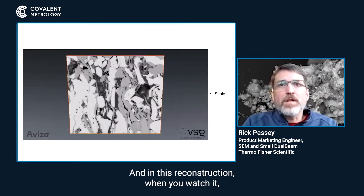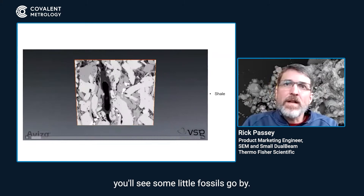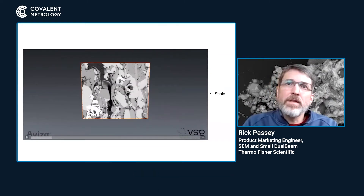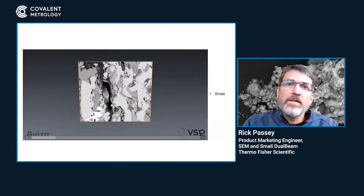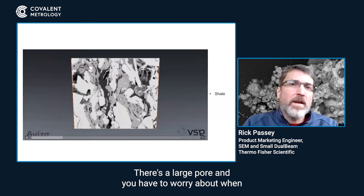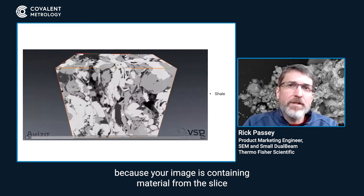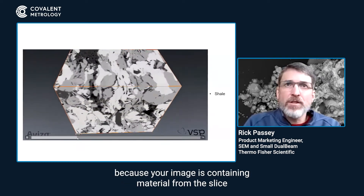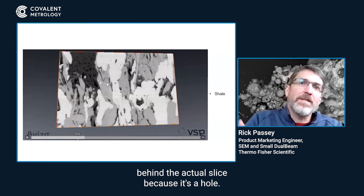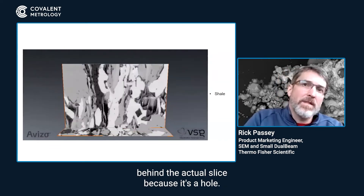In this reconstruction, when you watch it, you'll see some little fossils go by. I think one of them goes by right around here. There's a large pore, and you have to worry about pore back considerations when you do reconstruction, because your image is containing material from the slice behind the actual slice because it's a hole.